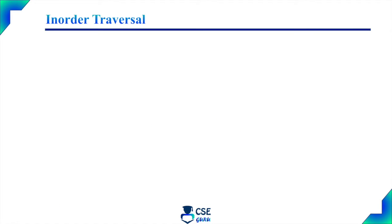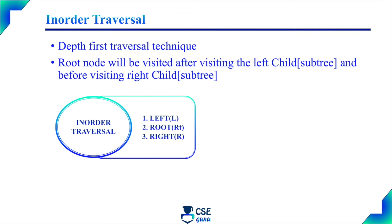Inorder traversal, as the name implies, the root node will be visited in the middle. That is, first it will visit the left child, then the root node will be visited, and then it will visit the right child.